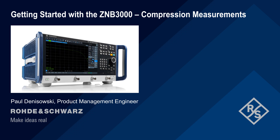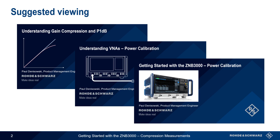Hello and welcome to this presentation: Getting Started with ZMB3000 Compression Measurements. In this presentation, we will explain the two different ways of measuring gain compression and compression point using a Rohde & Schwarz ZMB3000 series Vector Network Analyzer. This presentation assumes a basic understanding of gain compression measurements and familiarity with power calibration on a ZMB3000. Separate presentations are available if you would like a short introduction to each of these topics.